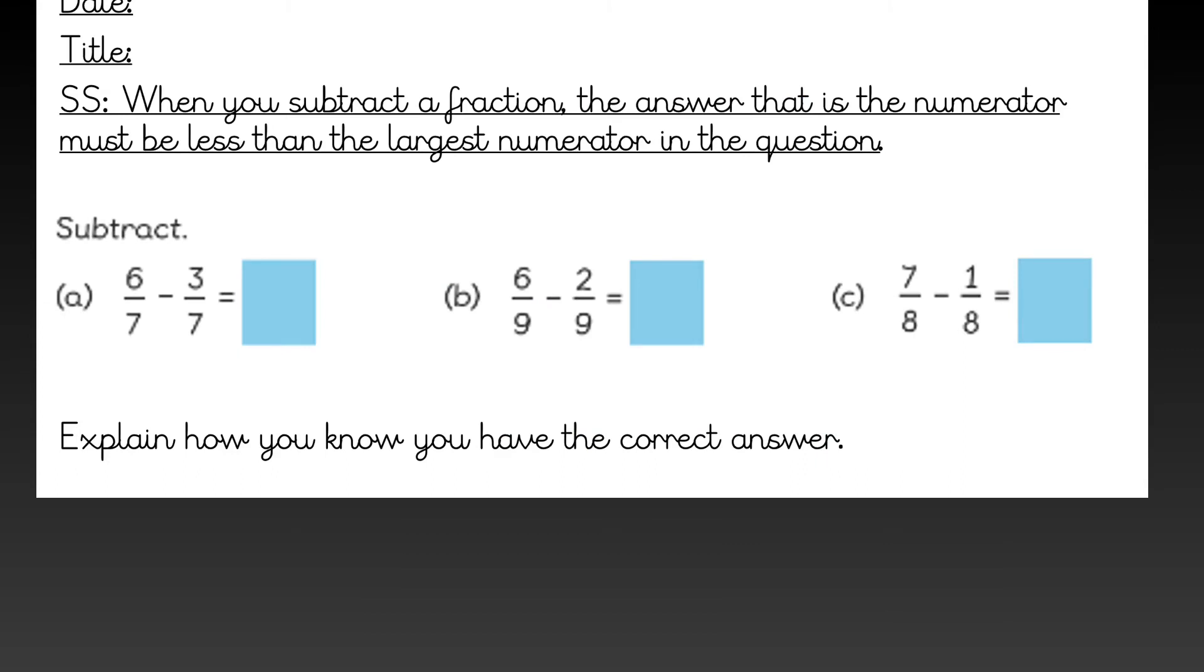Here is our journal work. The stem sentence states when you subtract a fraction the answer, that is the numerator, must be less than the largest numerator in the question. For example in A the largest numerator is 6. There is a 6 and a 3. The largest number is 6. So your numerator for your answer cannot be larger than 6.